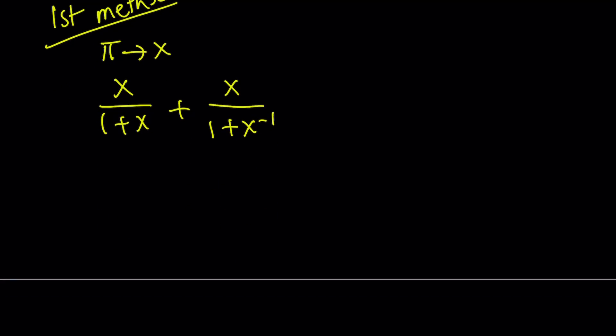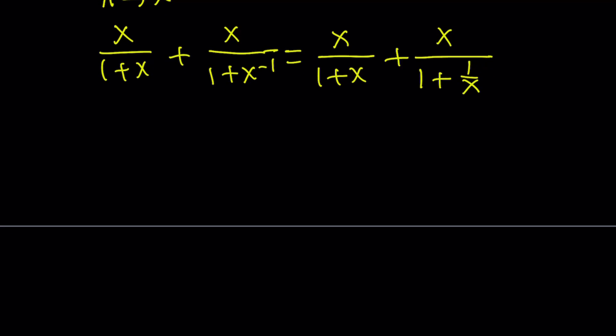Now let's go ahead and simplify this expression by writing what x to the power negative 1 means. And it just means that 1 over x. So I can write x to the power negative 1 as 1 over x. And then at this point, I want to make a common denominator.